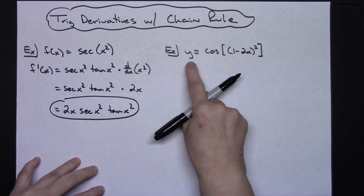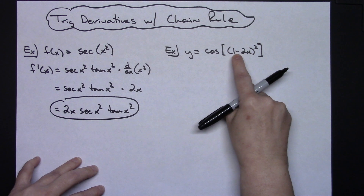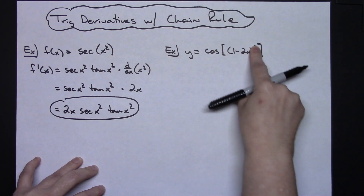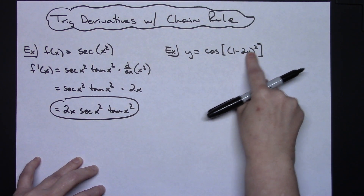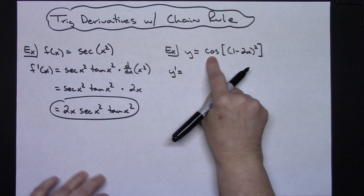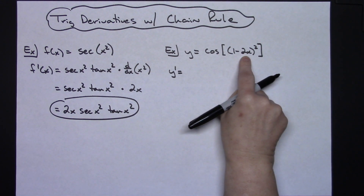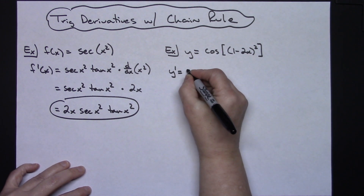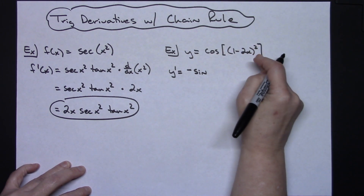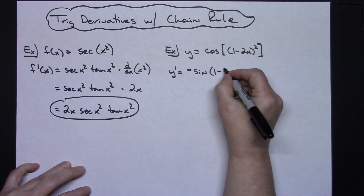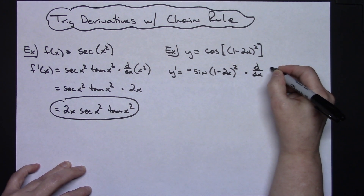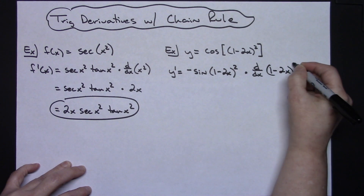Now looking at the second example, we've got y equals cosine of the quantity (1 minus 2x) quantity squared. I have an outside function of cosine and an inside function of (1 minus 2x) squared. When I take the derivative, y prime equals — we take the derivative of the outside function and leave the inside alone. The derivative of cosine is negative sine, and I leave the inside alone, dropping the square brackets, so we'll have (1 minus 2x) squared, times d/dx of (1 minus 2x) squared.